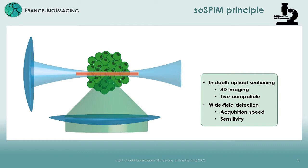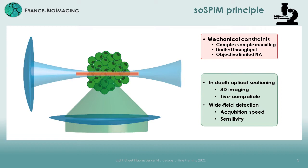Standard light sheet implementations are based on at least two objectives perpendicular to one another, in order to create a thin light sheet on one side and collect perpendicularly the fluorescent signal on the other side. This specific illumination architecture allows for unprecedented capacity to image living samples in 3D at high spatial and temporal resolution and with very low photodamaging effects.